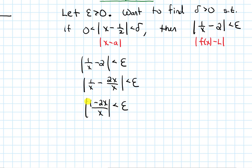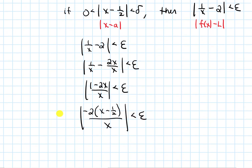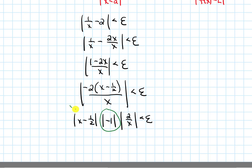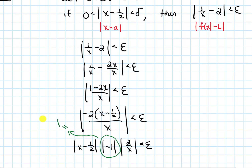Now my numerator — to make it look like x minus 1/2, I'm going to factor out a negative 2. So negative 2 times (x − 1/2) over x — there's that x minus 1/2 I needed. Now I can split this into pieces: |x − 1/2| times |−1| times |2/x|. I know |−1| = 1. I can't just divide by |2/x| to find delta because delta can't have an x in it.